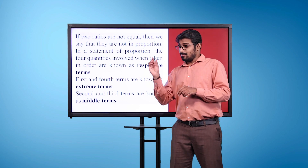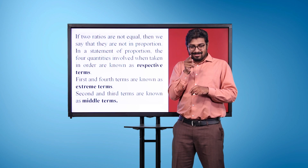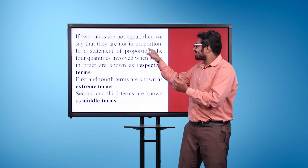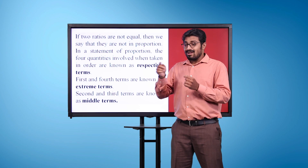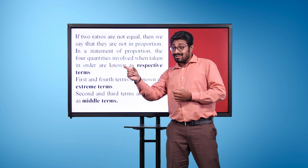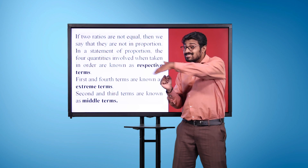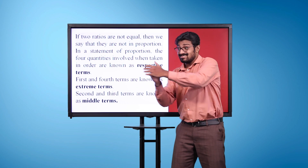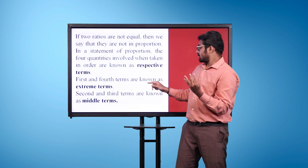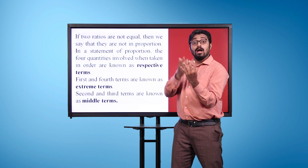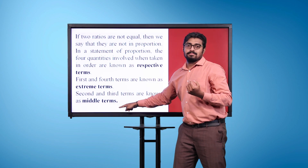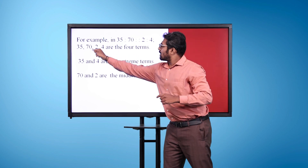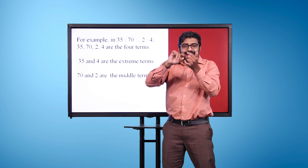If two ratios are not equal, then we say that they are not in proportion. In a statement of proportion, the four quantities involved, when taken in order, are known as respective terms. First and fourth terms are known as extreme terms. Second and third terms are known as middle terms. For example, in 35 is to 70 as 2 is to 4, the numbers 35, 70, 2, and 4 are the four terms.